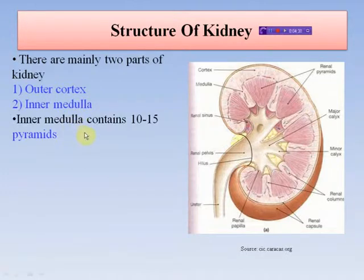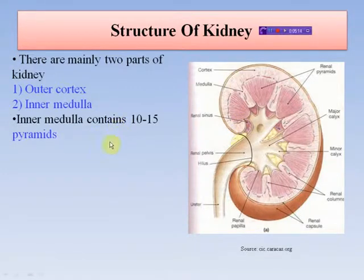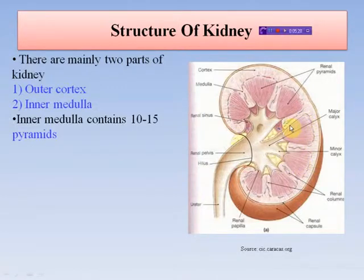The renal medulla is the inner part of the kidney with a red-brown color that resembles striated muscle. The inner medulla contains 10 to 15 renal pyramids. The striated appearance is due to many straight tubules and blood vessels within the renal pyramids.